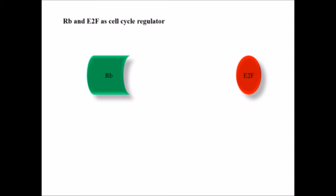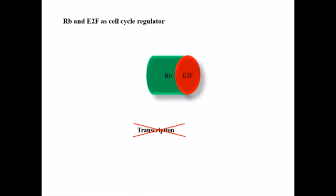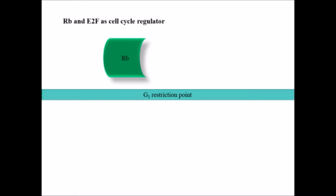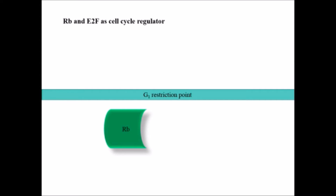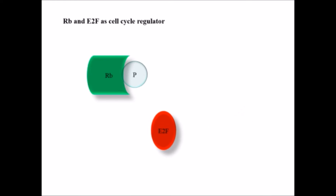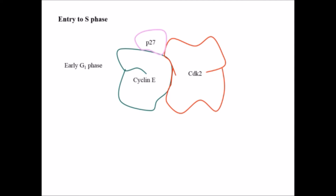If Rb is unphosphorylated, it will bind to E2F, the elongation promoting factor, and halt transcription. But once the cell passes the G1 restriction point, Rb gets phosphorylated with the help of CDK4/6-cyclin D in G1 phase. This releases E2F, which then helps in the regulation of the cell cycle by inducing transcription needed for G1 to S phase entry.